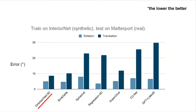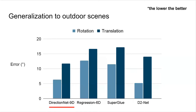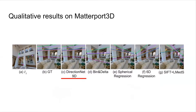To demonstrate the generalization ability of our model, we train DirectionNet on InteriorNet and test it on Matterport. Even without any fine-tuning on real data, our approach still outperforms most baselines. To test performance on outdoor scenes, we train the model on wide baseline datasets created from KITTI, and strong results show that DirectionNet is also effective outdoors. Qualitatively, we draw points on the target image and show the corresponding epipolar lines on the source image using ground truth and estimated poses. DirectionNet can still recover the correct relative pose in new scenes, even when presented with large motions.